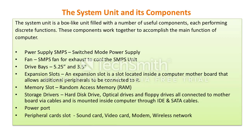The computer is called a computer system because different devices are added to it. The system unit is a box-like unit filled with useful components, each performing discrete functions that work together. Key components include the power supply — SMPS (Switch Mode Power Supply) — with a fan for exhaust cooling, and drive bays of 5.25-inch and 3.5-inch sizes for floppy disk drives.